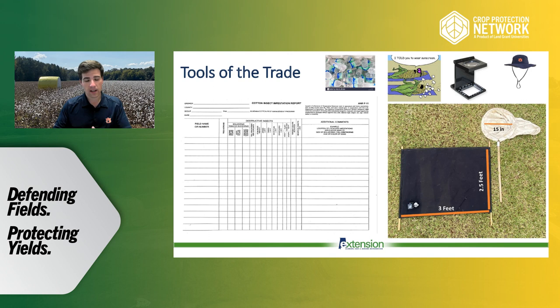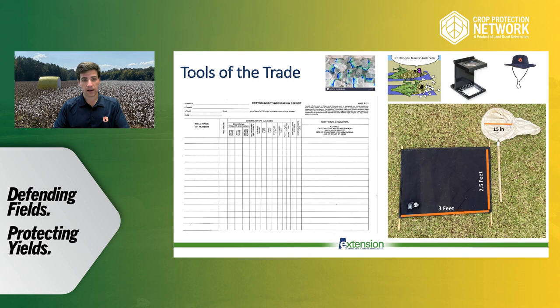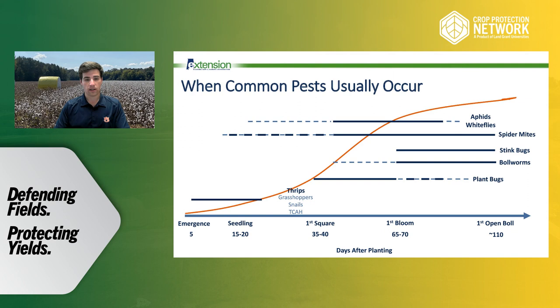You also may need things like a hand lens, which can be used for very small insects like spider mites or aphids to help with identification, and sometimes a handheld clicker when counting high numbers of insects or tracking square retention. It's important — if you're going out to scout a field where you may not have cell phone service, let people know where you're going and when you plan to be back, because you never know when you might run into things like snakes or sun poisoning.